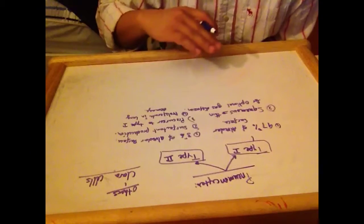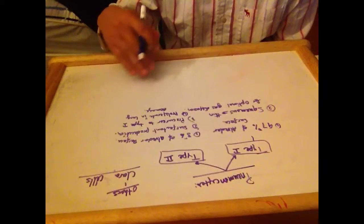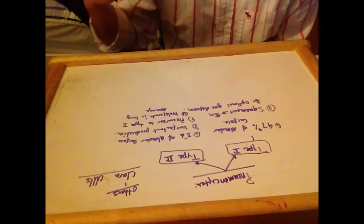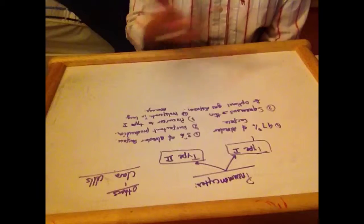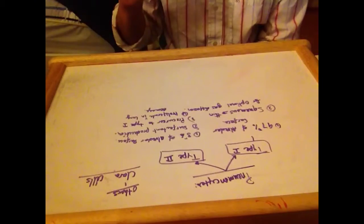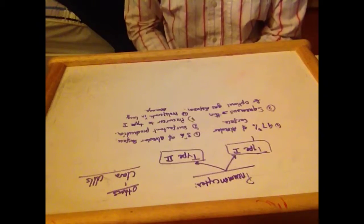It's a precursor to Type 1 and some Type 2 Pneumocytes and will proliferate in lung damage.